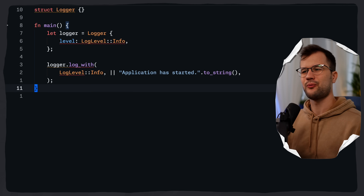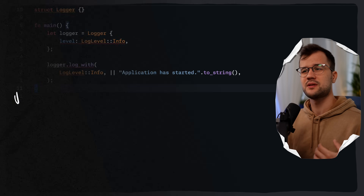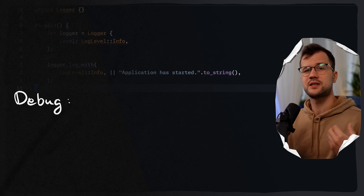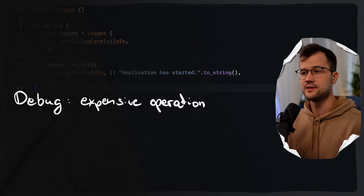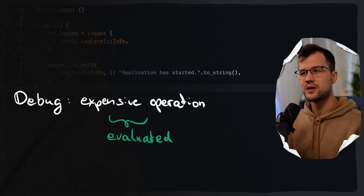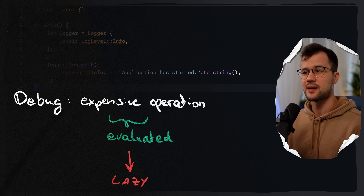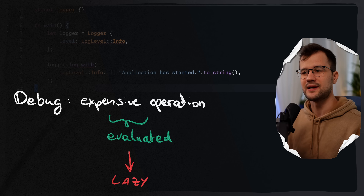You might ask why use a closure here instead of a simple string. The reason is: if you imagine an expensive operation and the level would be debug, that expensive operation would still be evaluated with a plain string. However, if we use a closure, we apply lazy evaluation and performance optimization because the closure is only evaluated when the log level matches.